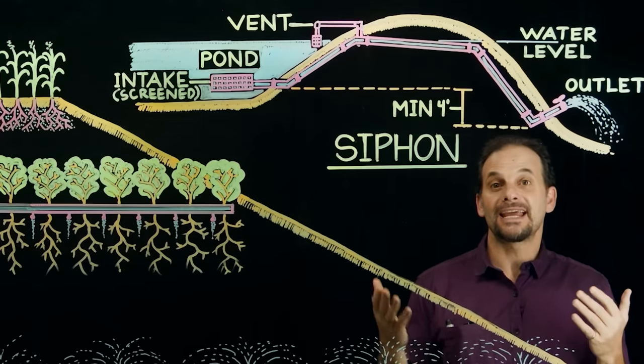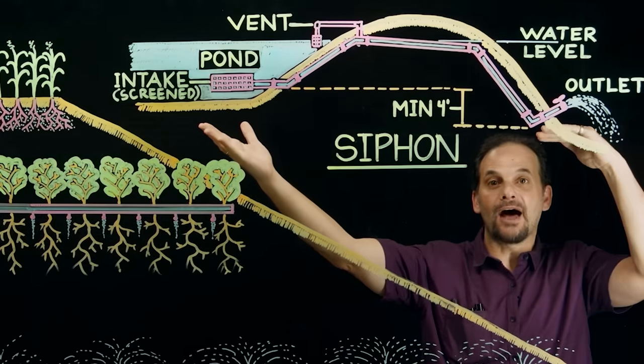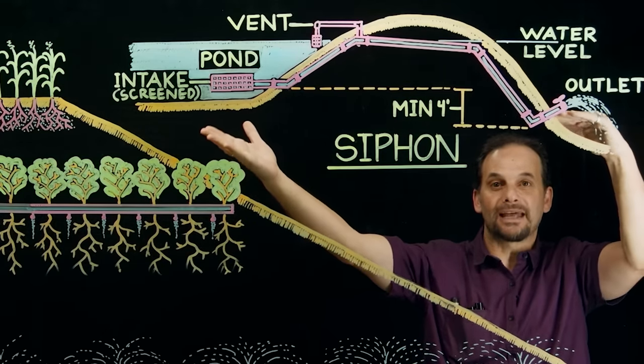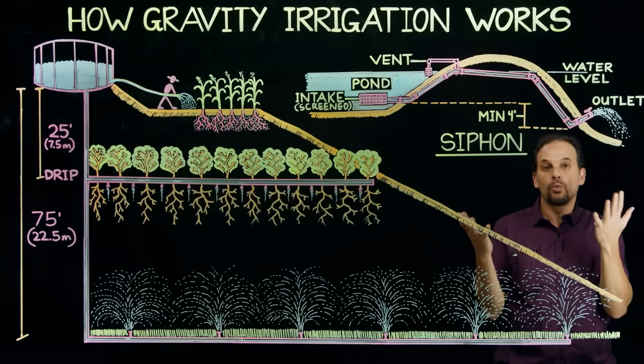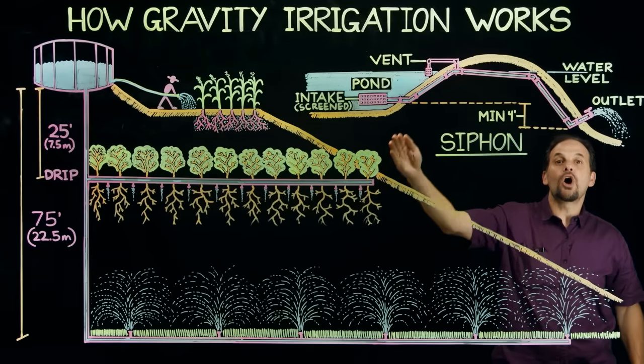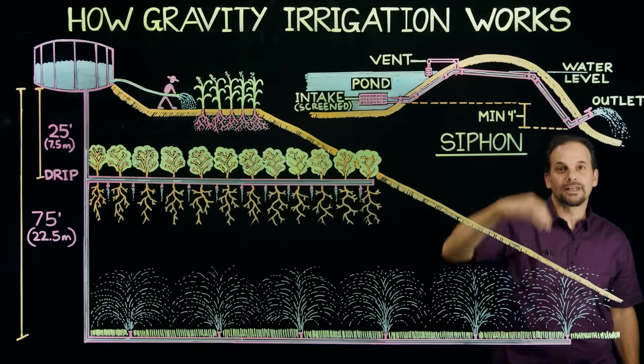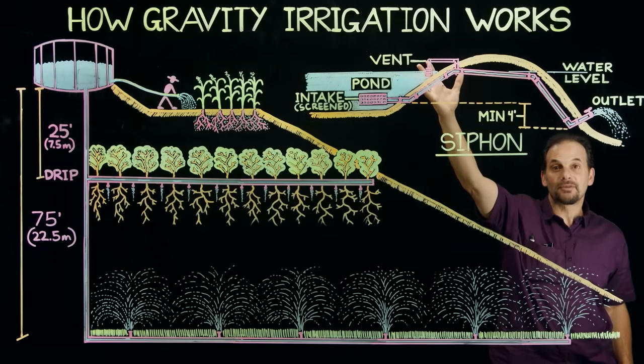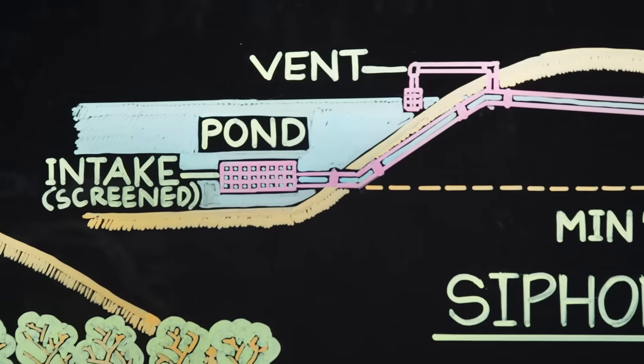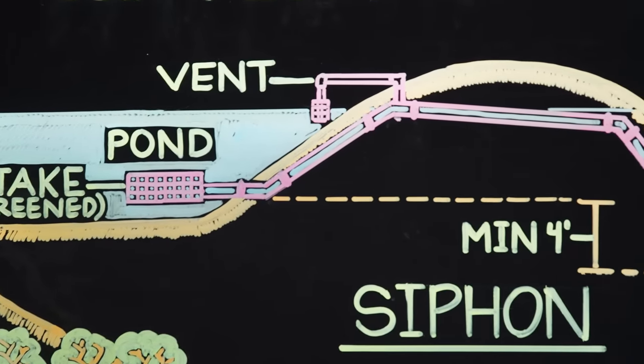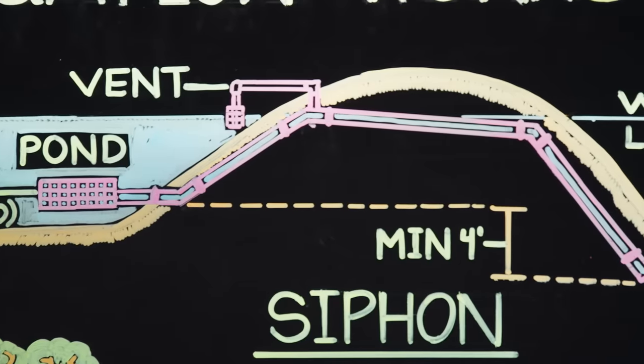Here we see the water intake in the pond at this level and the outlet located below the intake by at least four feet. But the water has to travel up and over to get to that lower level. This is done by having this vent at the top of the siphon. The siphon is primed by pouring water into this vent. That's how the siphon gets started.